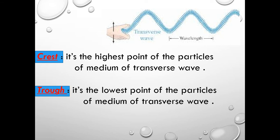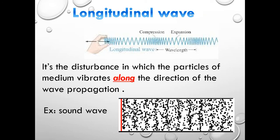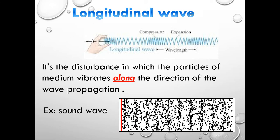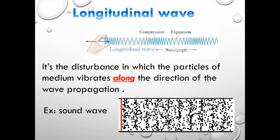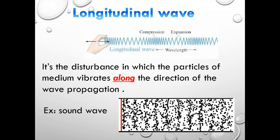The second type is longitudinal waves. In longitudinal waves, the movement is left and right, not up and down as in transverse waves. We can see some particles very close to each other and others far apart. The particles are distributed along the same direction of wave propagation. In transverse waves the particle motion is perpendicular, while in longitudinal waves it is along the direction of wave propagation.